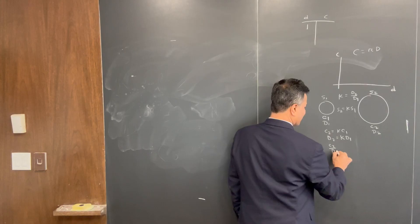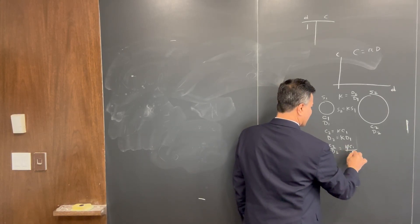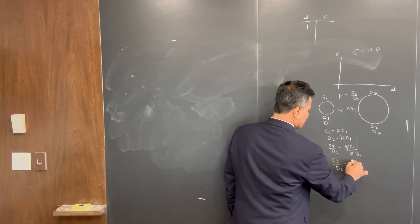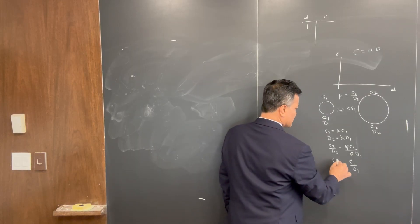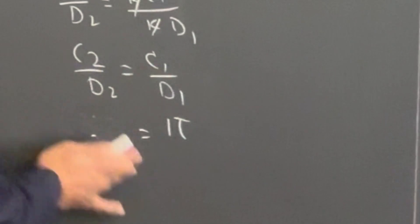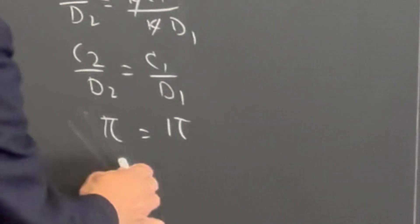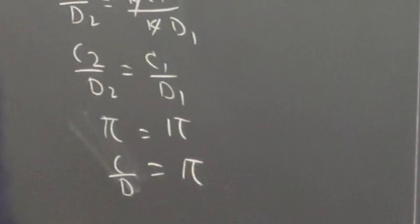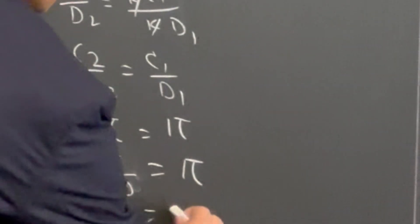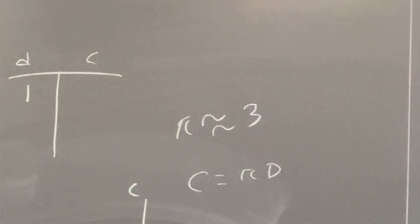So c2 over d2 equals k·c1 over k·d1 — the k's cancel — so c2 over d2 equals c1 over d1, which equals π. So c2 over d2 is also π. Pi is the ratio between circumference and diameter. The relationship you discover is C equals π·d, but we're going to approximate π as just 3 because we're not using a calculator.